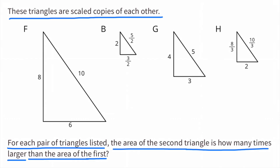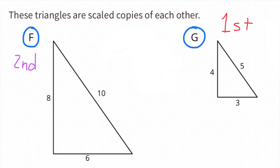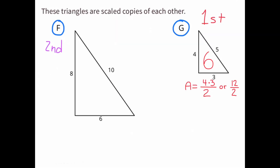Number 3: these triangles are scaled copies of each other. For each pair of triangles listed, the area of the second triangle is how many times larger than the area of the first. Part A: triangle G and triangle F. Triangle G was the first triangle mentioned and triangle F was the second. We need to find the area of both triangles. The area of triangle G is half of 4 times 3, or half of 12, which equals 6 square units.